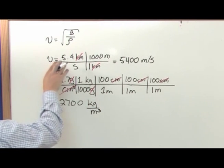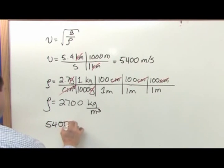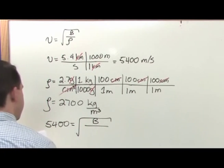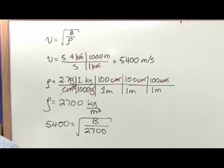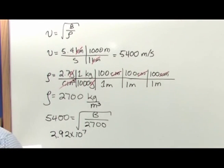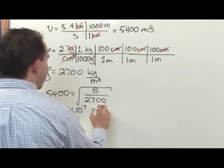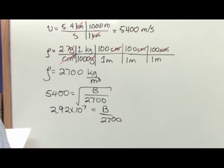So we want to plug in what we know for V, which is 5,400, and under here we're going to have the bulk modulus divided by 2,700. To solve for B, we'll square both sides. We'll get 2.92 times 10 to the seventh, and on the inside here we're just going to have B divided by 2,700.